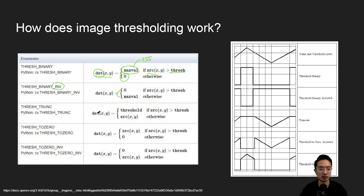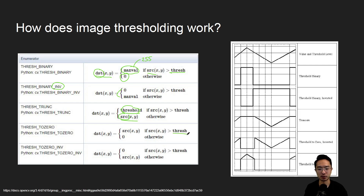Then you have Thresh Truncate. If the source is greater than the threshold, then it'll be the threshold value. Otherwise, it's going to be the original pixel value. The main difference here is that instead of max value, you set it to your threshold, and instead of 0, you set it to your actual original pixel value. Then you have Thresh To Zero — if your image pixel is greater than your threshold, set it to your original image pixel; otherwise let it be 0.